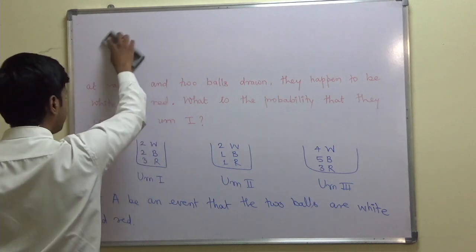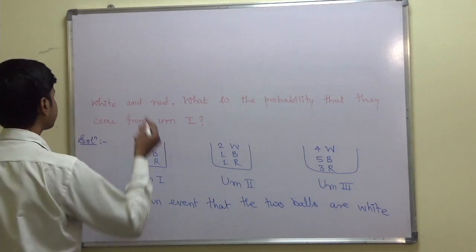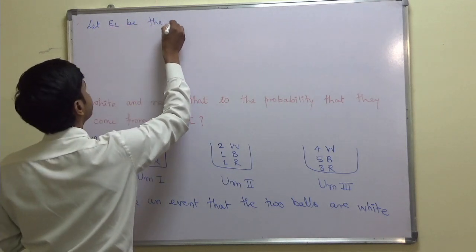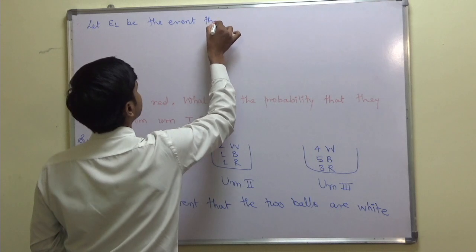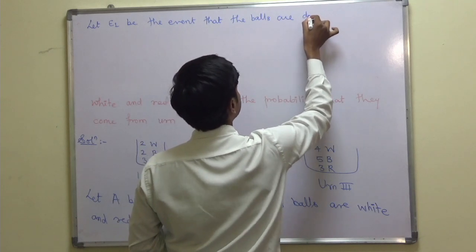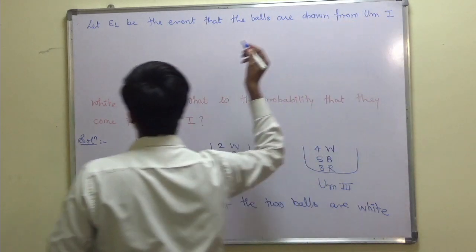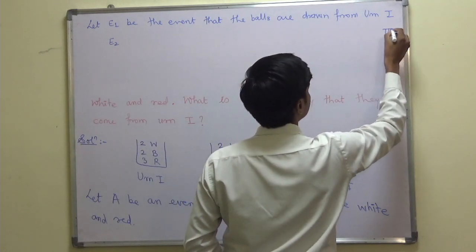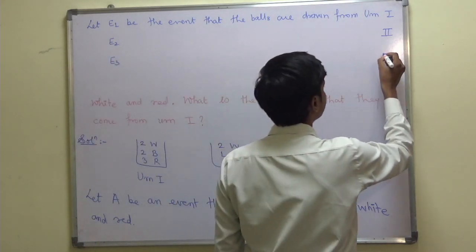Now, the urn chosen may be the first, second, or third. So I define: let E1 be the event that the balls are drawn from urn 1, E2 be the event that the balls are drawn from urn 2, and E3 be the event that the balls are drawn from urn 3.